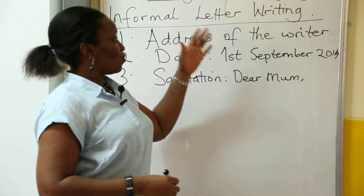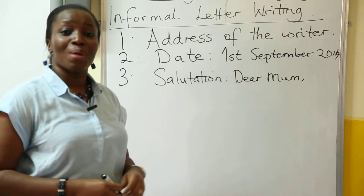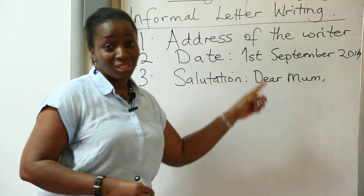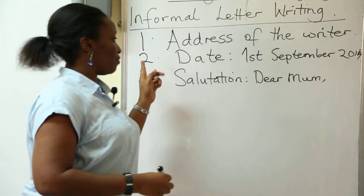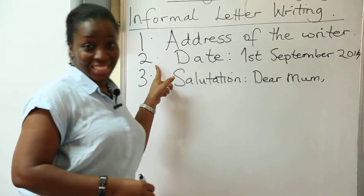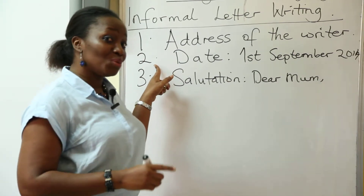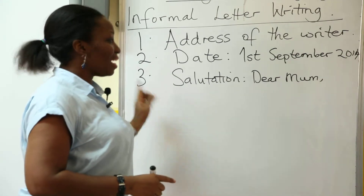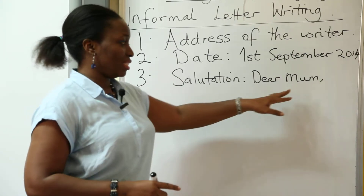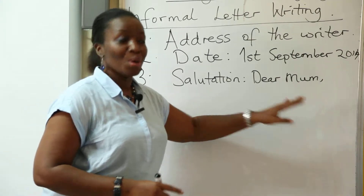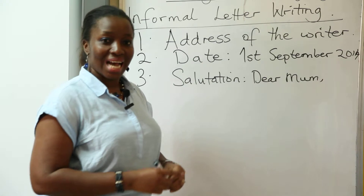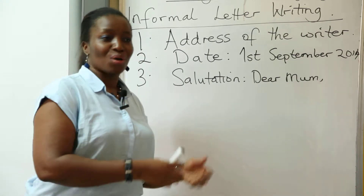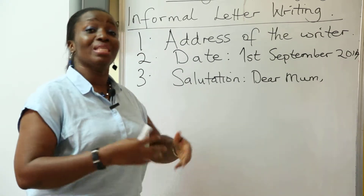When you're writing an informal letter, remember you have to write your address, you have to fix the date so the receiver would know when it was written, and then the salutation — which is dear mom, or dear dad, or dear brother, or dear sister, uncle, aunt, or dear friend.